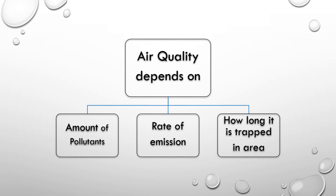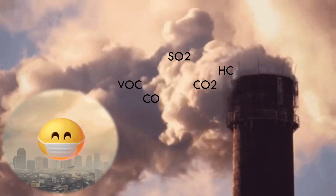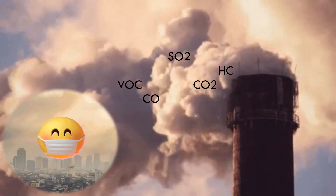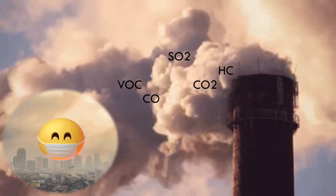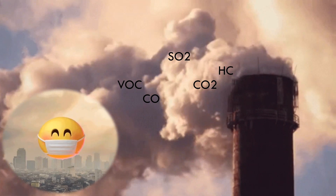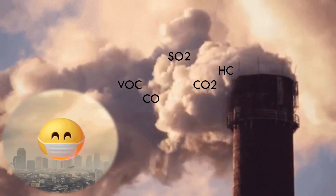The pollutants from these sources are released into the air which can affect the health of humans, animals and our environment. The quality of air depends on three factors: the amount of pollutants, the rate at which they are released into the atmosphere, and how long they are trapped in an area. This air from industries consists of pollutants like sulfur dioxide, hydrocarbons, volatile organic compounds, carbon dioxide, carbon monoxide, and many more like lead and smoke. These pollutants are really harmful for human health, plants and our environment.